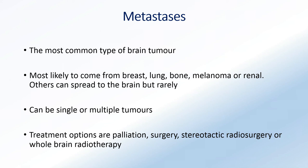The most common type of brain tumor, unfortunately, are those that are metastatic. They most commonly come from the breast, lung, bone, melanomas, or the kidney, and they often spread to the brain.